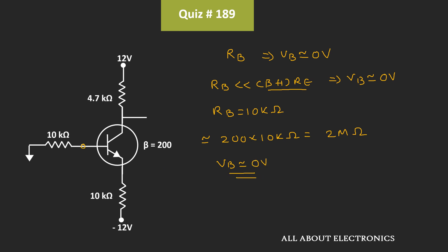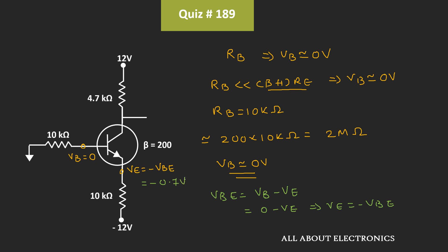That means the base voltage Vb is equal to 0. Due to that, the emitter voltage will be equal to minus Vbe, because Vbe = Vb − Ve. Since Vb is 0, we can say the emitter voltage Ve equals −Vbe. The typical value of Vbe is 0.7V, so the emitter voltage is equal to −0.7V.